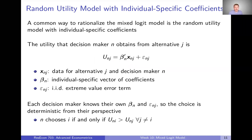The utility that decision maker N obtains from alternative J is going to be a linear combination of beta and X. We're already making a linear utility assumption here — we don't necessarily have to, but it is often one that's made with the mixed logit model and makes things much easier.